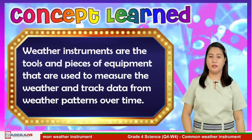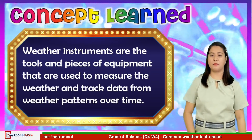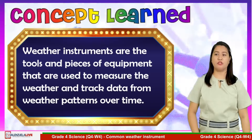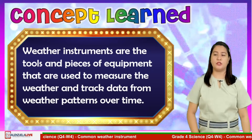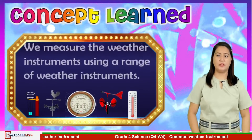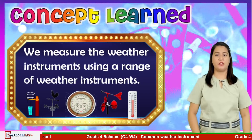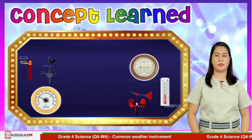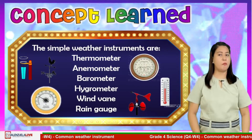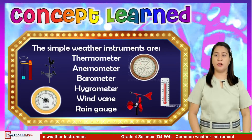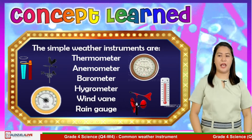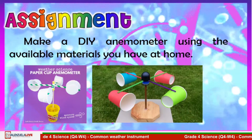This time, let us take a look at the concepts you learned today. First, weather instruments are tools and pieces of equipment used to measure the weather and track data from weather patterns over time. Next, we measure the weather using a range of weather instruments. The simple weather instruments are: number one, thermometer; number two, anemometer; three, barometer; four, hygrometer; five, wind vane; and last, rain gauge.